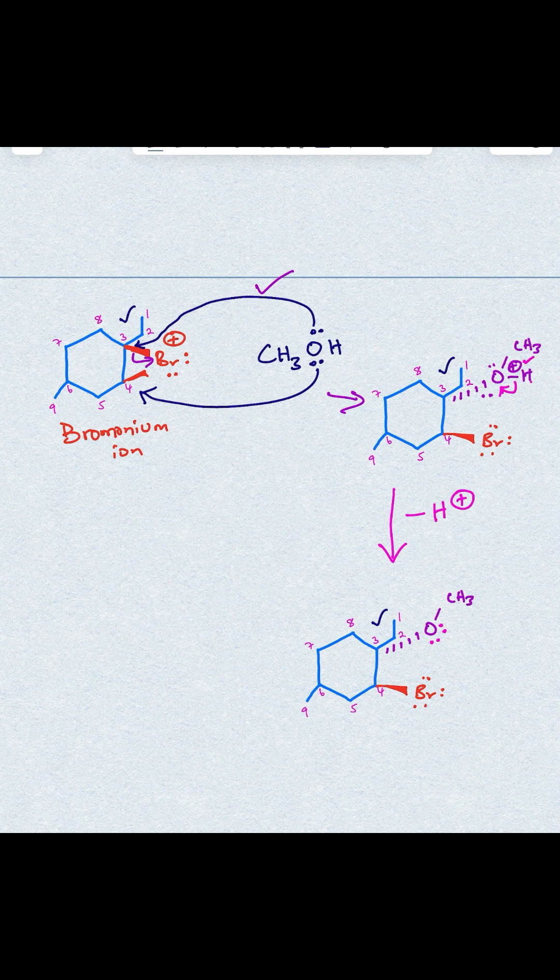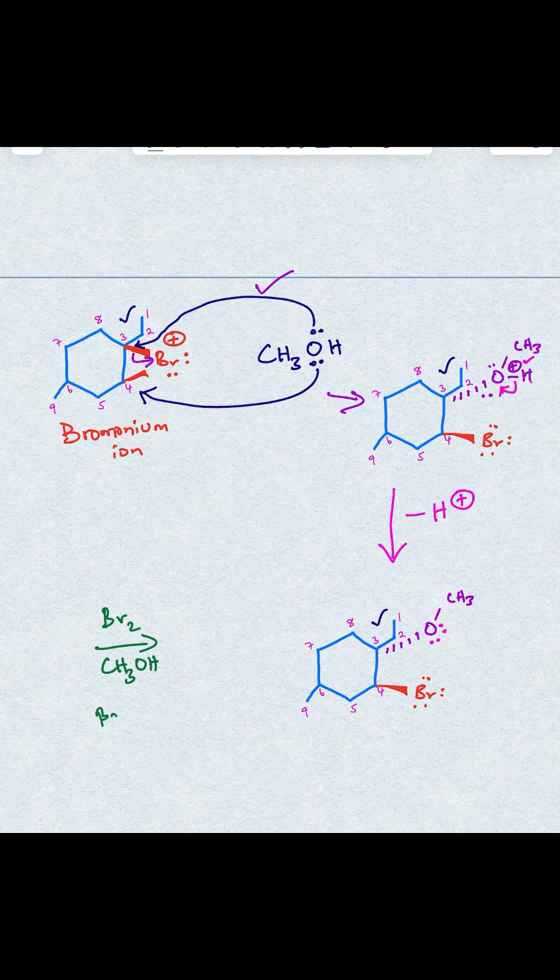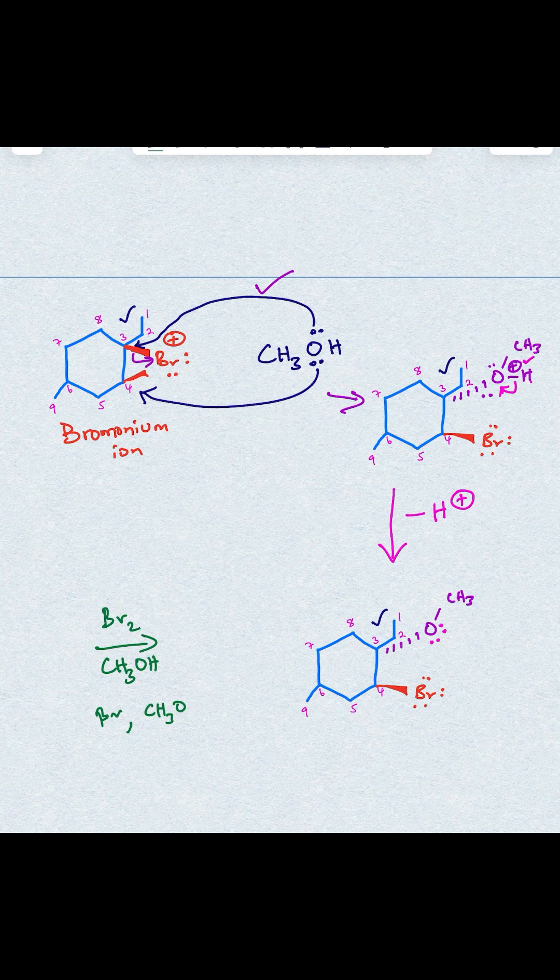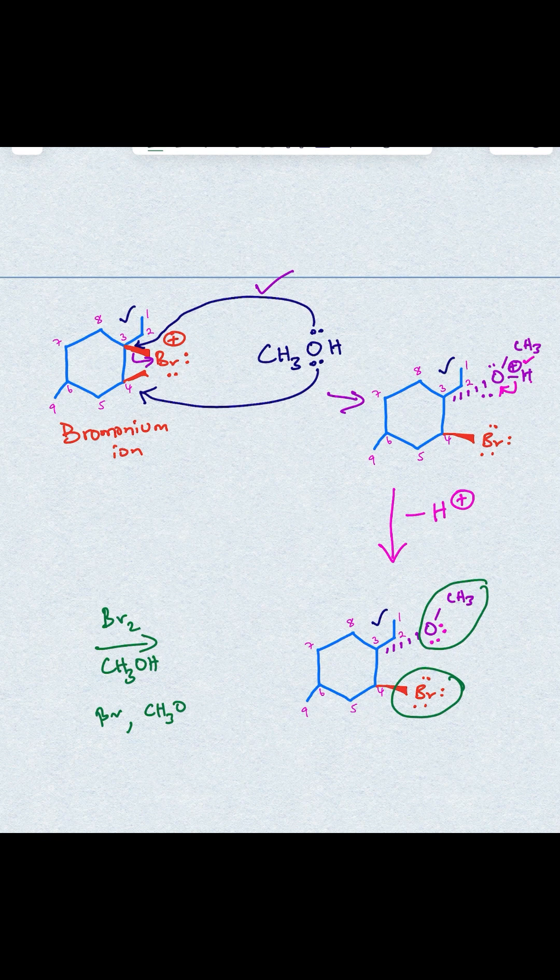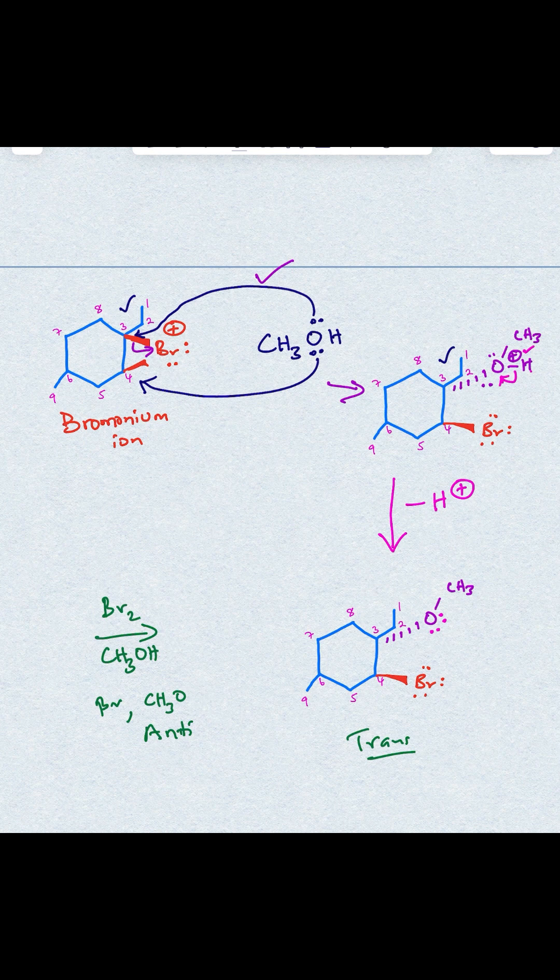You can see from this result that the net effect of addition of Br2 with methanol is you end up adding Br and CH3O across the double bond. So you end up adding the Br and the OCH3 across the double bond, and that addition is anti, meaning that you end up with a trans product, where one group goes in and the other one comes out. Thank you very much for watching this video. Please consider supporting the channel by subscribing.